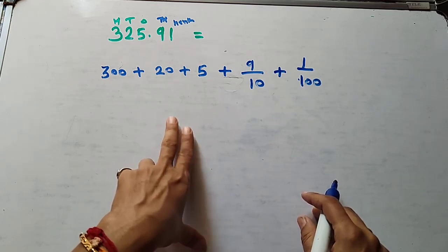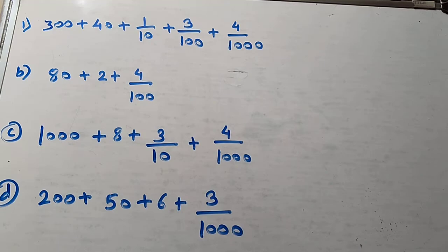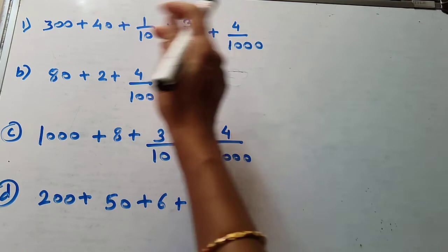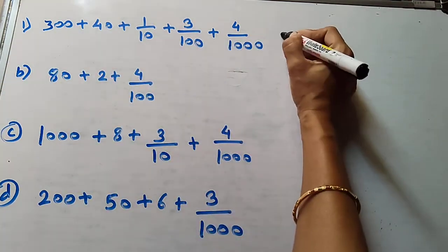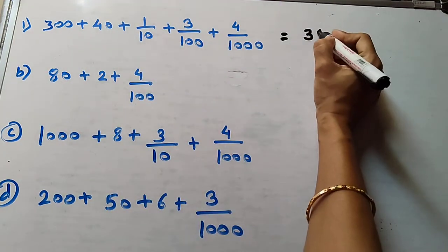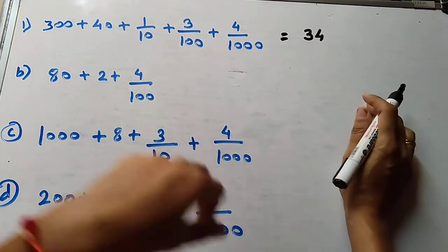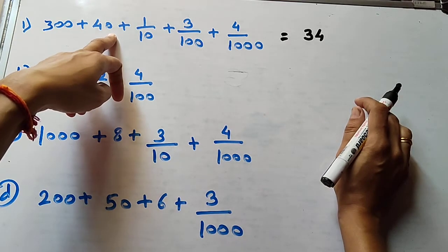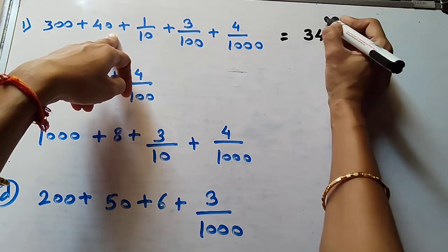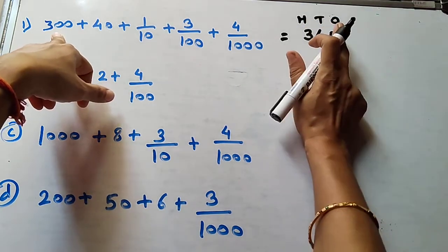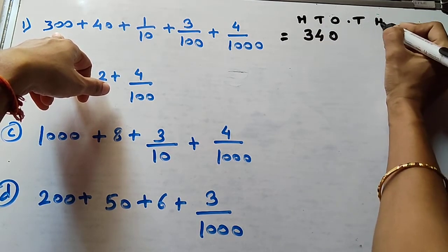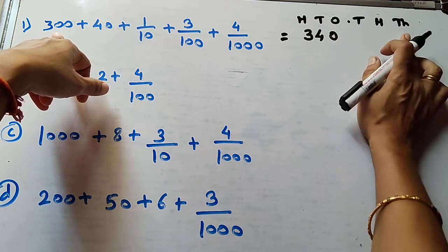Now we see how to write the number in short form. The expanded form is given. This is 300, so you write 300. There is a 4 in the tens place, so write 4 tens. There is no ones place, so write 0 at the ones place. The greater number is 100, so write the number starting from hundreds. This is the decimal point. After decimal: tenths, hundredths, and thousandths. Tenths place is 1, hundredths place is 3, thousandths place is 4. So we get the number 340.134.